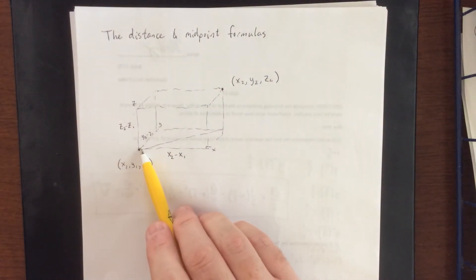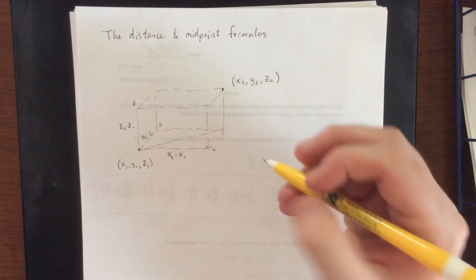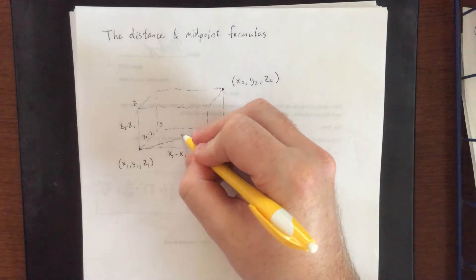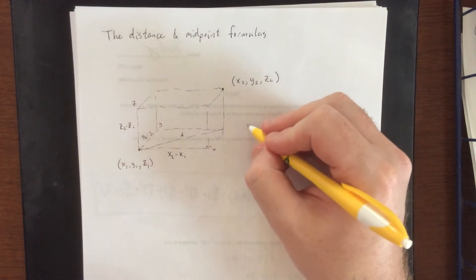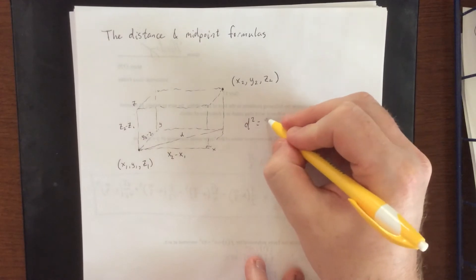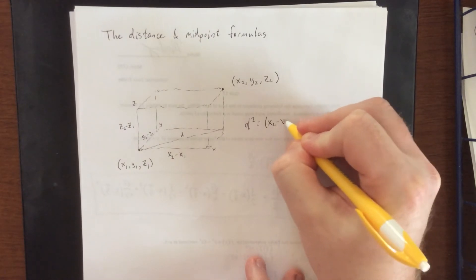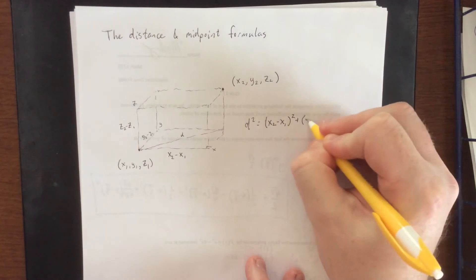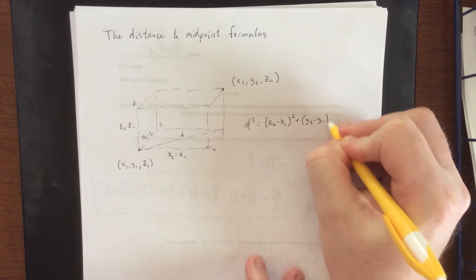To create this distance across the base of the box, we could use the Pythagorean theorem for that. Call that distance d for a second. We'll say that d² is equal to (x₂ - x₁)² plus (y₂ - y₁)².